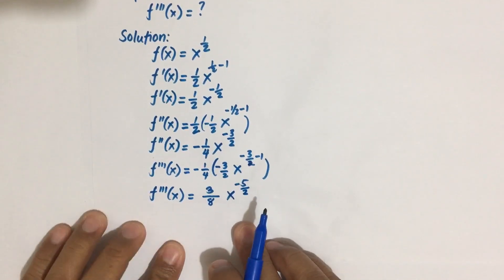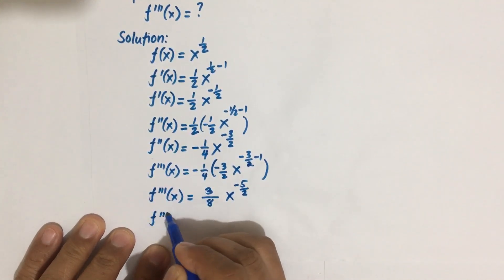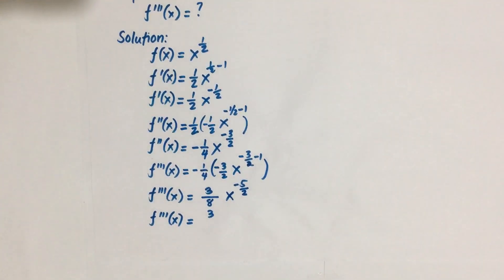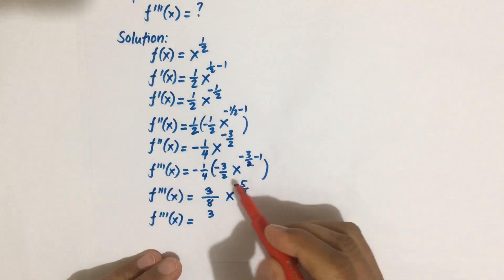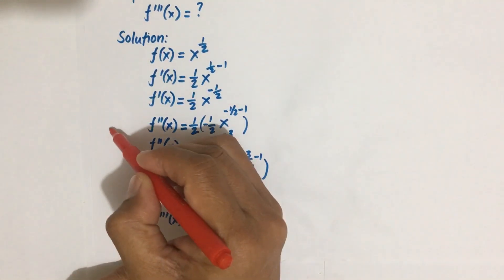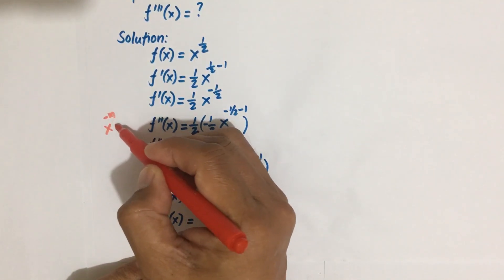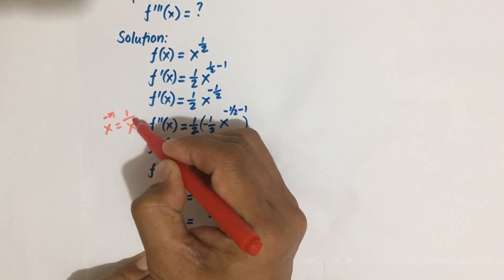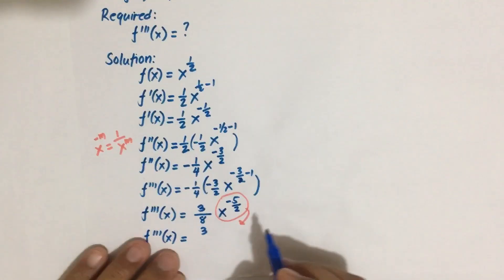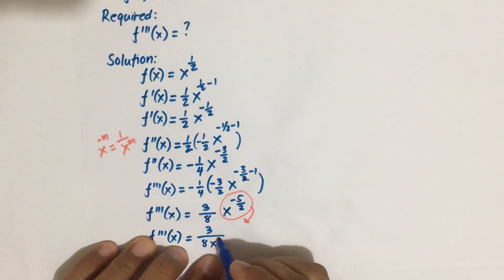We can still simplify this. We use the law of exponents: x to the negative m equals one over x to the positive m. So bringing that down, the negative exponent becomes positive, and the denominator becomes 8 times x to the power positive five-halves.